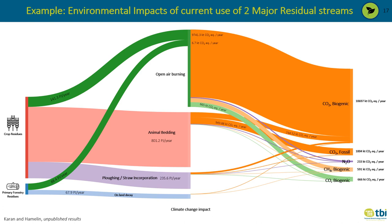This slide shows an example of the LCA results for the climate change category for the use of primary forestry residues and crop residues in France. The flows represent emissions from different greenhouse gases in CO2 equivalents. Open-air burning of crop residues and forestry residues form the largest emitters of greenhouse gases, with emissions almost equal to about 12,000 kiloton of CO2 biogenic, followed by fossil CO2 which mainly comes from background processes like transportation and ploughing of straw.